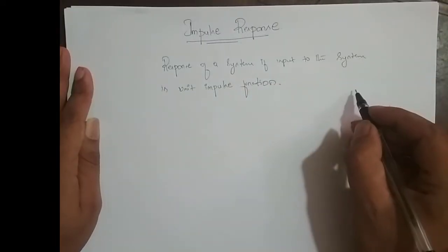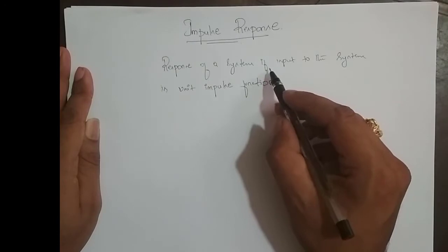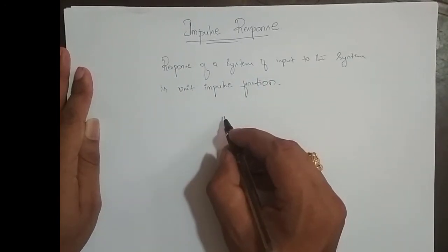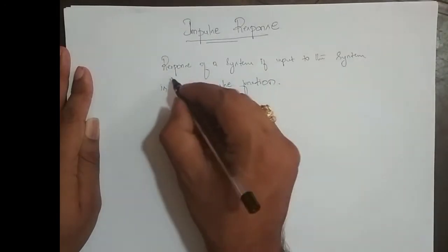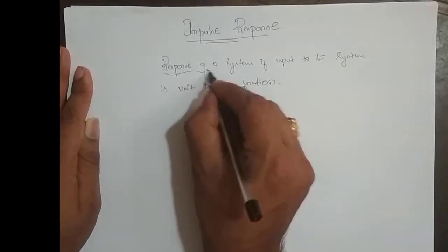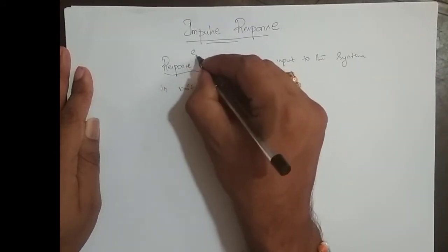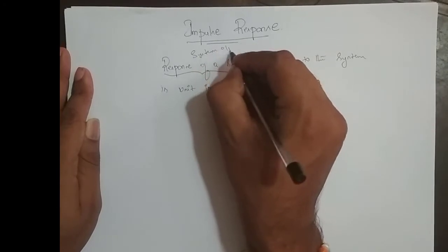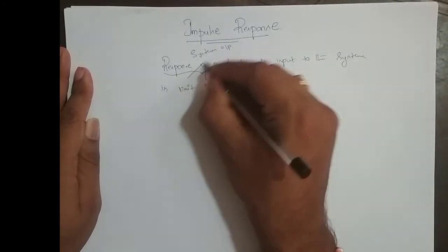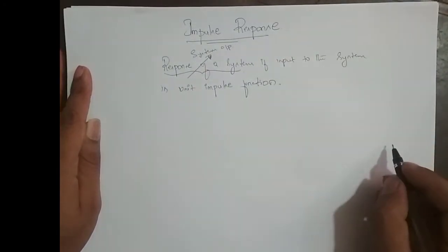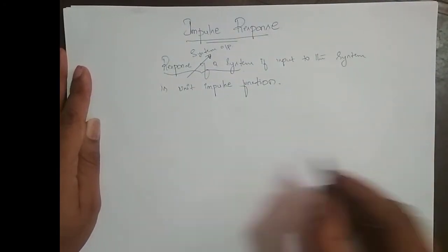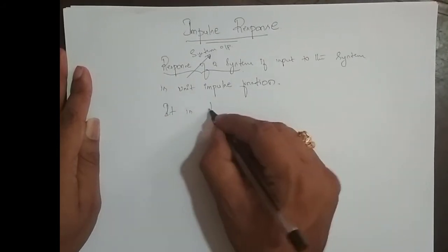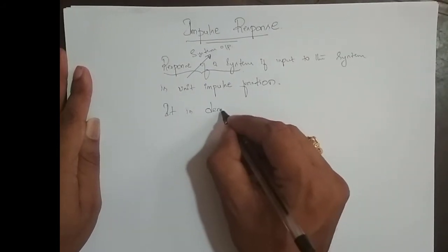It is the response of a system when the input to the system is a unit impulse function. When I say response of a system, it is nothing but the system output — y of n.